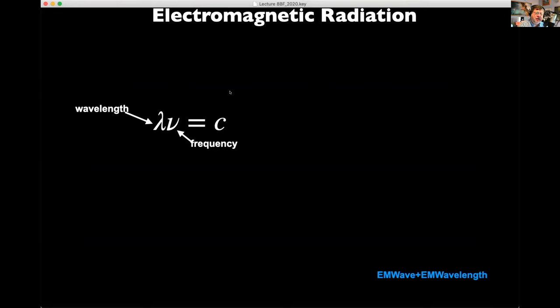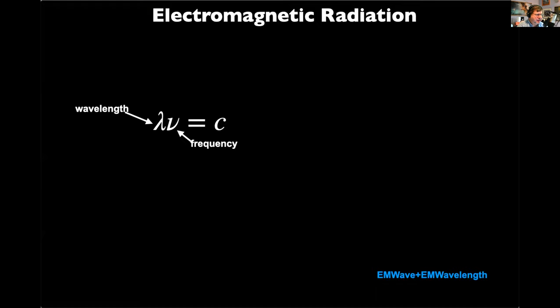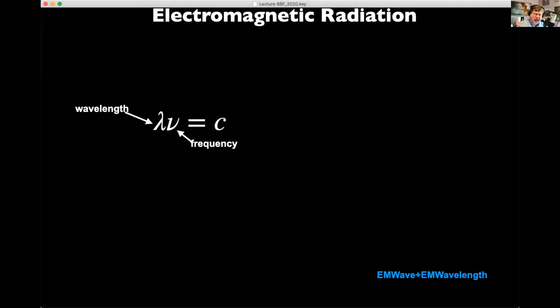Here's an equation you really need to know: the wavelength — the length of one oscillation — times the frequency, how often it goes up and down, is equal to the velocity. In the case of electromagnetic radiation, that velocity is always the speed of light, designated by C. If something has a wavelength of one inch and oscillates 10 times a second, it will move 10 inches in that second. Wavelength times frequency equals velocity, which equals C for electromagnetic radiation.